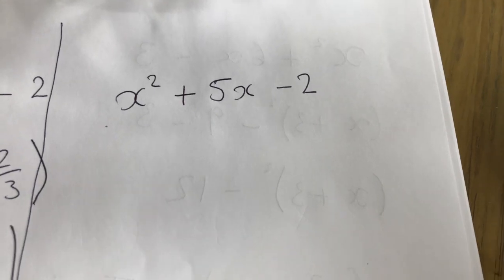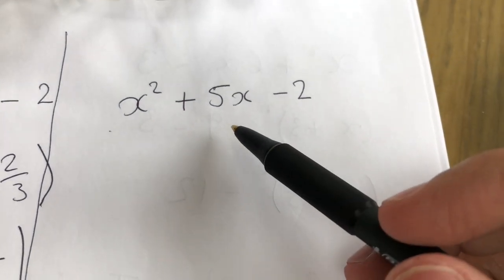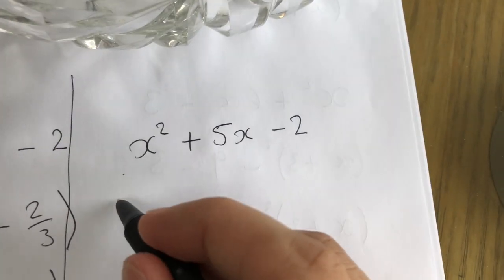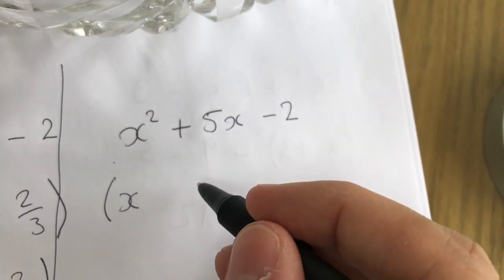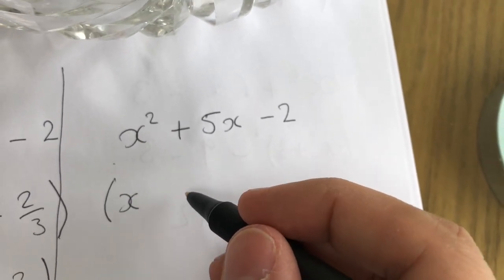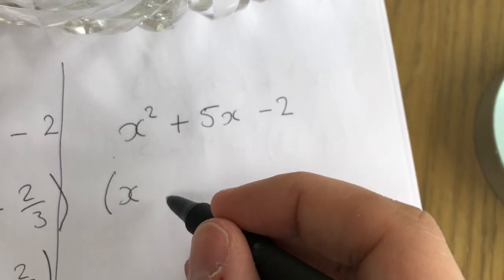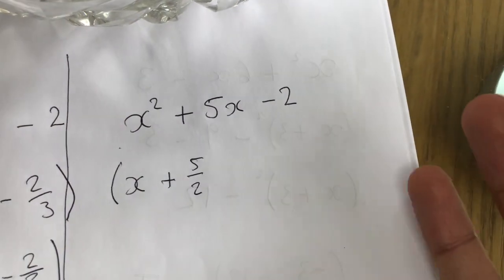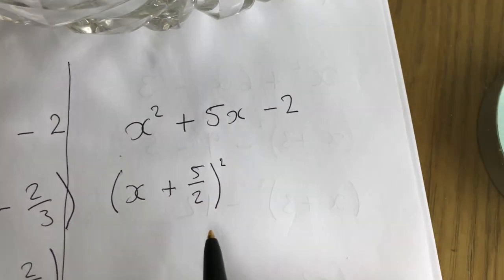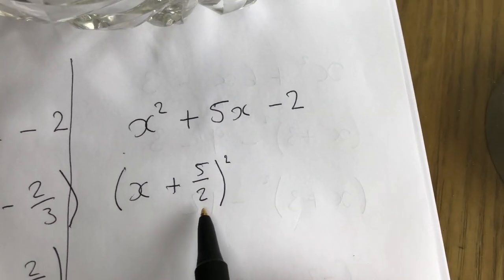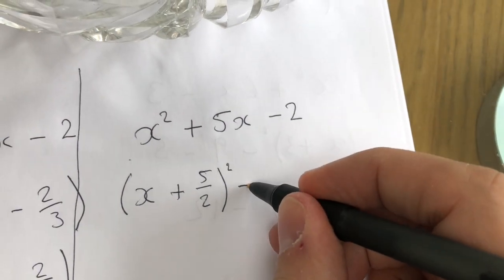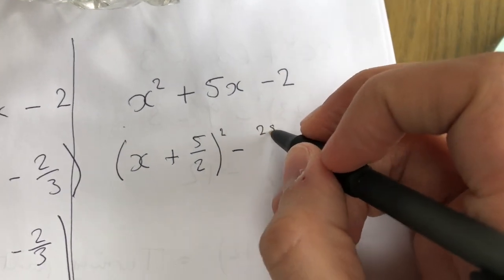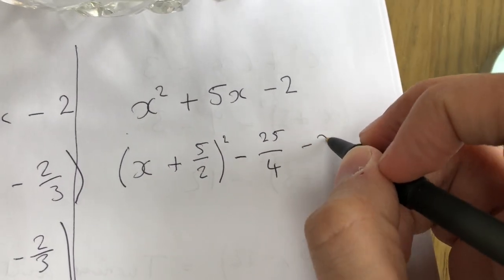Completing the square can sometimes get a little bit tricky if the middle coefficient is an odd number. So we start off the same: bring the x down and half this number. We always prefer to keep it as a fraction rather than a decimal — you'll see why in a minute. So plus 5 over 2. Half of 5 is 5 over 2, squared. Then we're going to minus this number squared. The reason we keep it as a fraction is because it's much easier to square — you just square the top and square the bottom. So minus 25 over 4, and then minus 2.